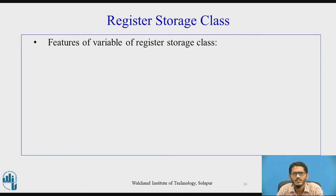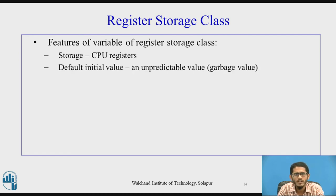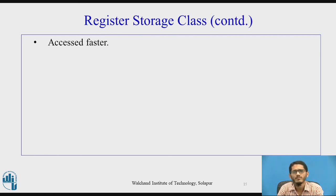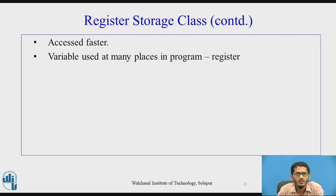The register storage class stores the variable in CPU registers rather than memory. The default initial value is also a garbage value. The scope is local to the block, and the life lasts as long as control remains within the block. The advantage is that variables stored in registers can be accessed faster since they are nearer to the processor. We generally use register storage class for variables used most frequently in a program, such as loop counters.